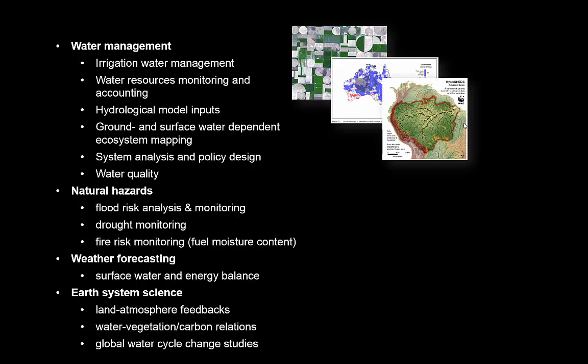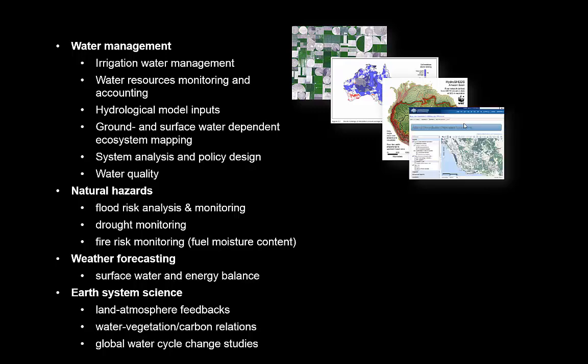To do hydrological modeling such as shown in that map, we need inputs. Particularly, we need to know where the catchments are and where the rivers flow, and we use remote sensing for that. We also want to know where ecosystems are that are sensitive to changes in groundwater and surface water, and again we can use remote sensing quite usefully to identify where they are.